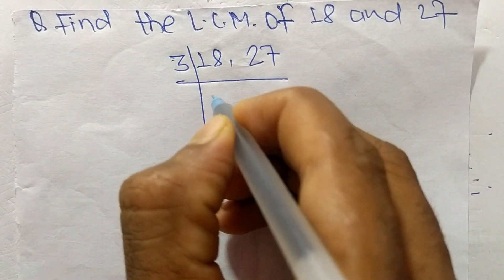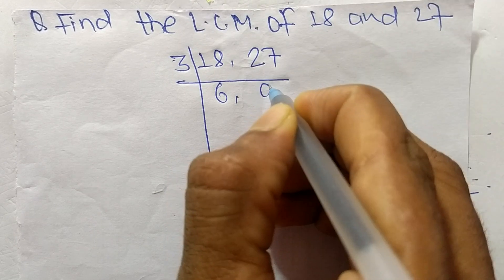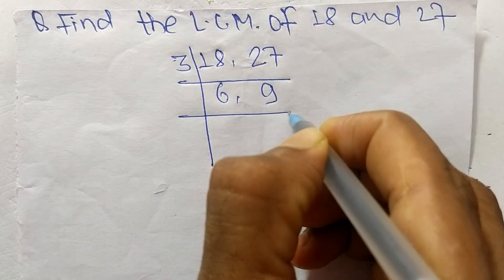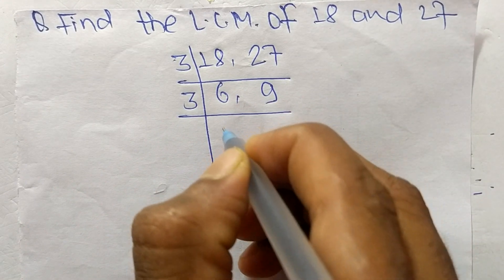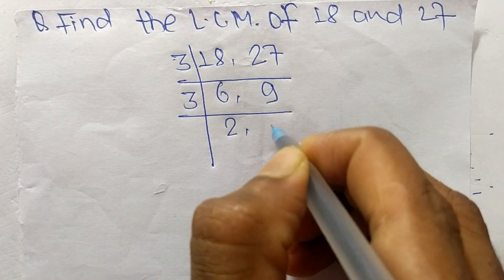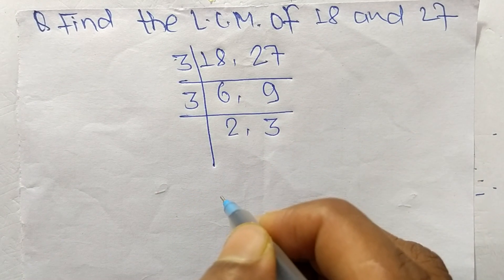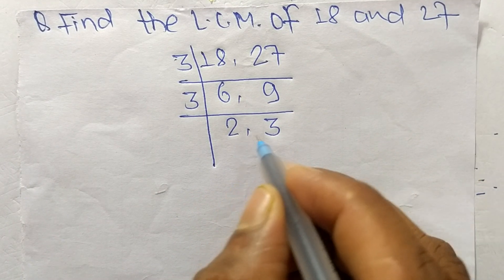So 3 times 6 equals 18 and 3 times 9 equals 27. Again it is divisible by 3, so 3 times 2 equals 6 and 3 times 3 equals 9. So at last we have 2 and 3.